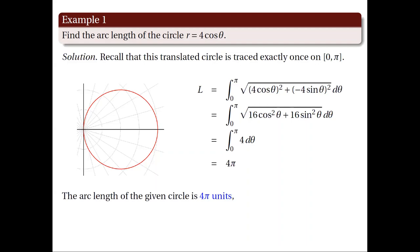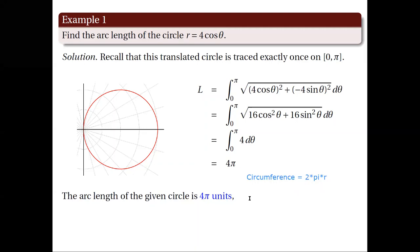If you haven't noticed yet, this result corresponds to the circumference of a circle with radius 2. Recall that the formula for the circumference of a circle is C equals 2πr. So for a circle of radius 2, the circumference is 4π units. This makes sense, as finding the arc length of a circle is equivalent to computing its circumference.